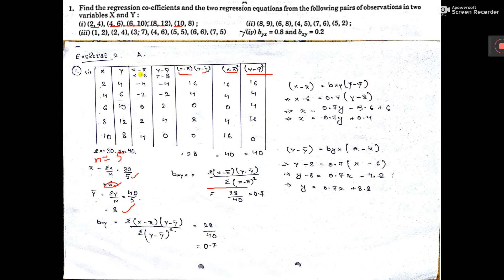Now how to make this table? x minus x̄ means 2 minus 6 here, 4 minus 6 here, 6 minus 6 here, 8 minus 6 here, 10 minus 6 here. Similarly, this column y minus ȳ: so 4 minus 8 is there, 6 minus 8 is there, 10 minus 8 is there, and so on. This column into this column gives the product column (x minus x̄) into (y minus ȳ).